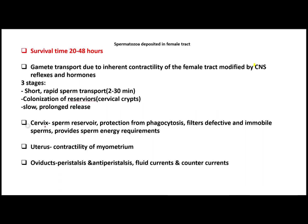Sperms then go to the cervix, which acts as a sperm reservoir, protects them from phagocytosis, filters defective and immobile sperms, and provides energy. Then sperms go to the uterus, where contractility of the myometrium pushes them forward. They then reach the oviducts, where peristalsis and fluid currents push them further forward.